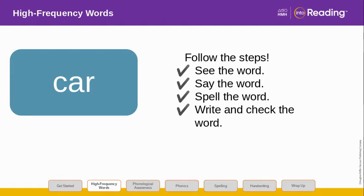Look at the letters in the word. Let's spell it. C-A-R. The letters A-R stand for the sound R. Blend with me. C-A-R. Car. Now write the word car. Try to write it without looking. Then check it.